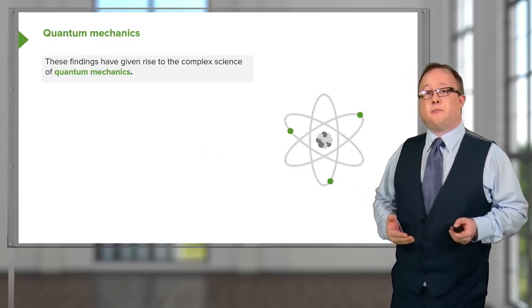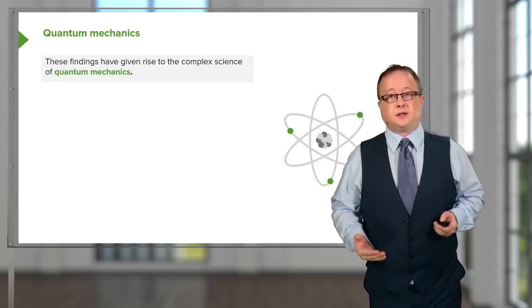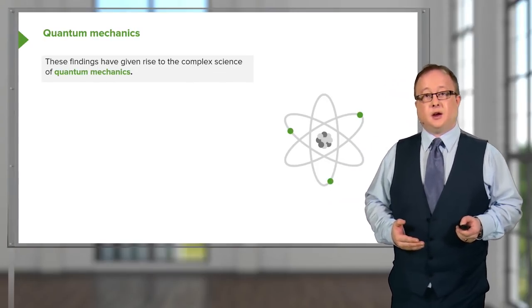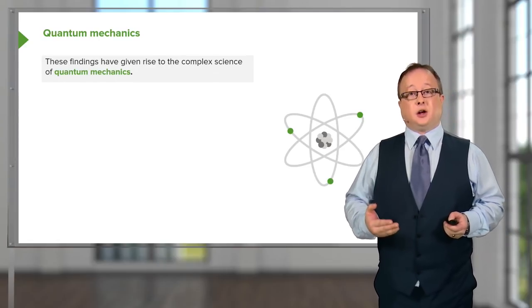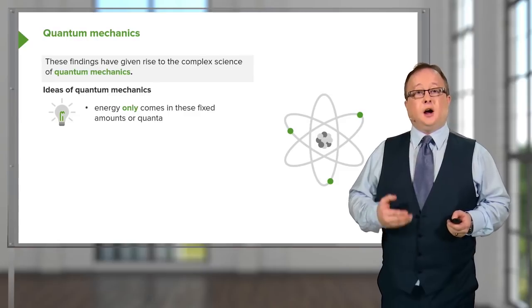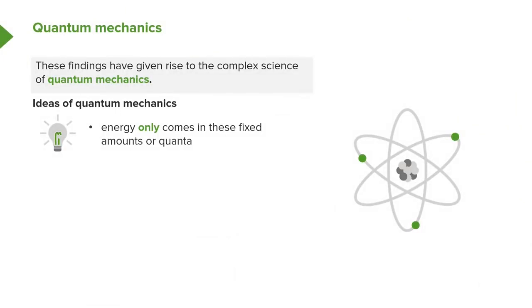The findings of Bohr have given rise to the complex science of quantum mechanics, which we will touch upon briefly. These were based on a lot of the work done by Schrödinger and also by Heisenberg. The ideas of quantum mechanics are that energy only comes in fixed quanta — you can't have an infinitesimal amount of energy; you can only have energy which exists as certain fixed packets.